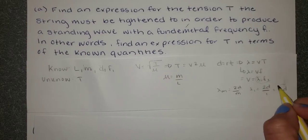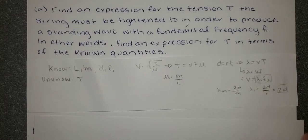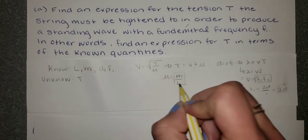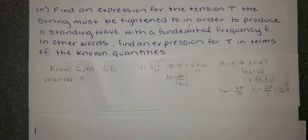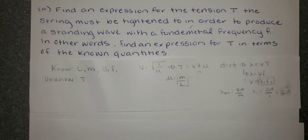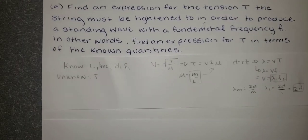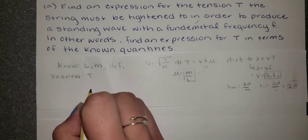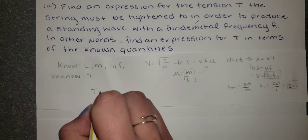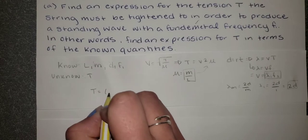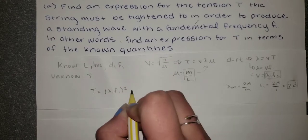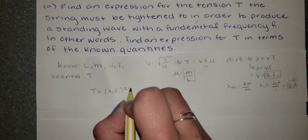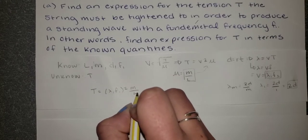So using this equation, this equation for velocity, and this equation for density, we're going to plug right back into this equation for T and then solve for T in order to find an expression using those known values. So if we rewrite it again, it's going to be T equals velocity, which we discovered was lambda 1 frequency 1 squared, and then we're going to multiply that by the linear density, which is mass divided by length.